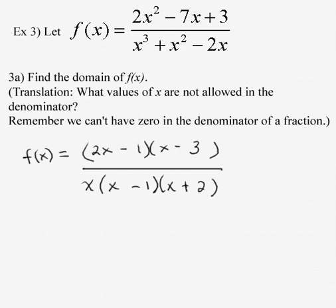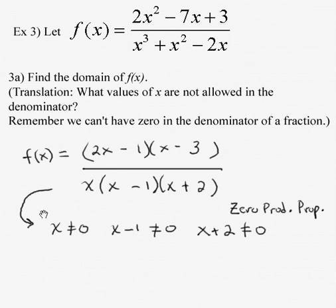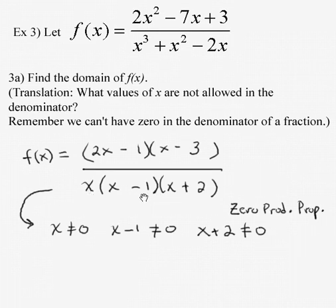All right, what we want to do here is we want to find out what values of x would cause some trouble in the denominator. First of all, if x was 0, 0 times the rest of the denominator would make the entire denominator 0. So I cannot allow x to be 0.